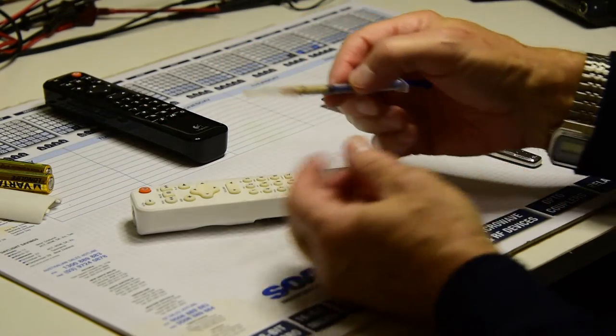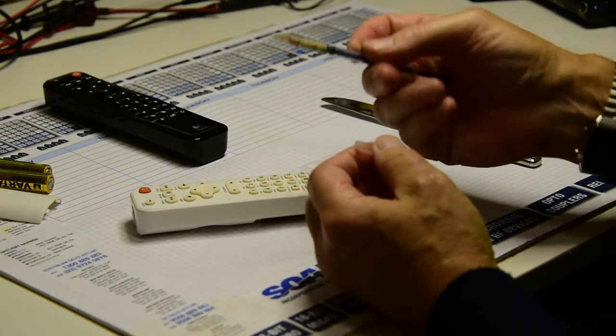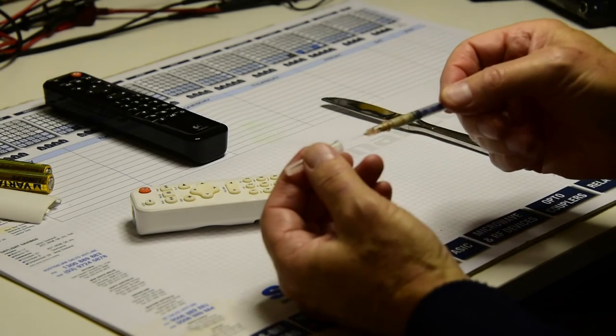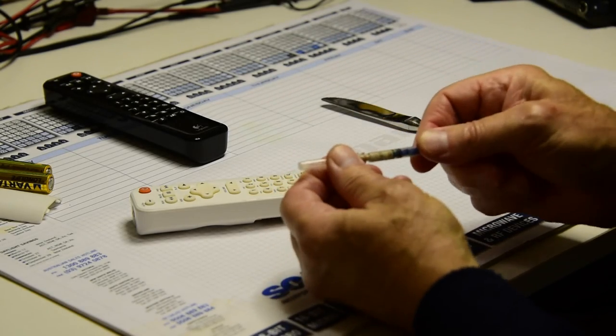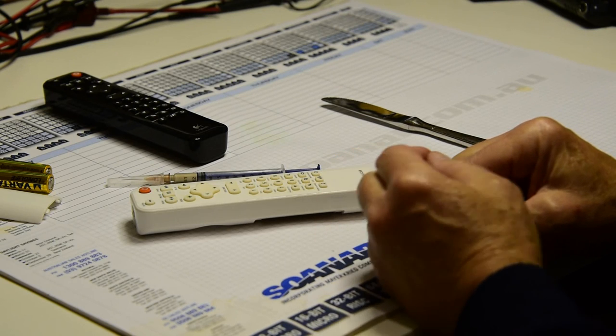You'll notice this little syringe here. This is conductive ink which I purchased a while ago. This can be used to repair the conductive ink tracks on the board if that's required. So that's about it.